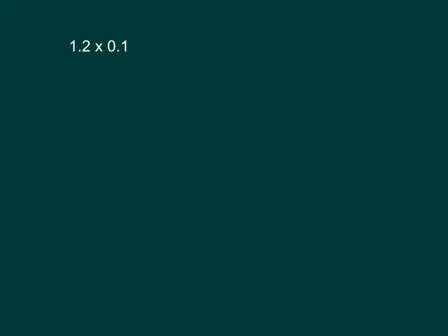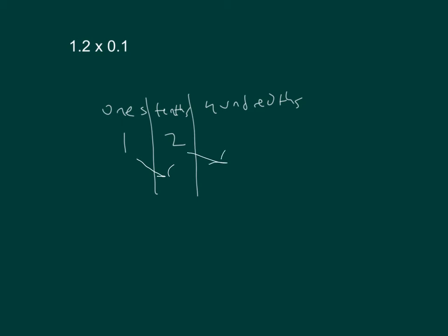Here we have one and two-tenths times one-tenth. Let's look at a place value chart to see what would happen — which direction would the number be shifted with its places? We place one and two-tenths into our place value chart. Multiplying by one-tenth, we shift our digits one unit to the right. So we get twelve-hundredths. One and two-tenths is also equal to twelve-tenths times one-tenth, which equals twelve-hundredths, which equals 0.12 as a decimal.